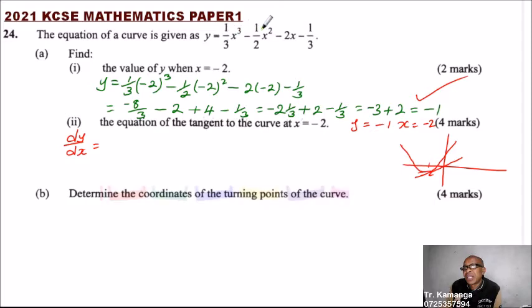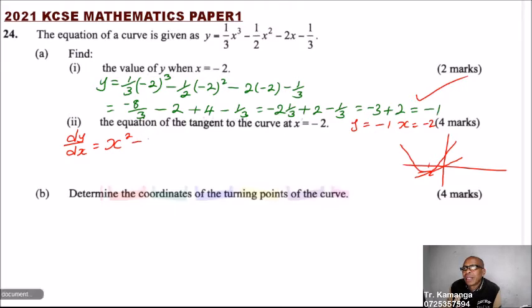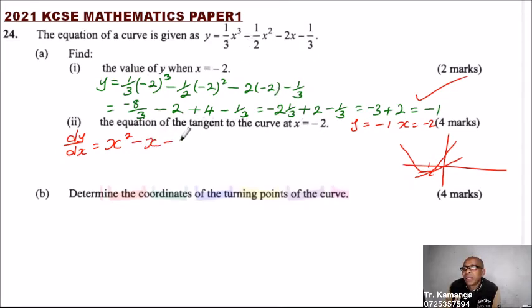We differentiate it. You multiply 3 times one-third, that will give us x squared. Then you multiply 2 here, that will give us minus x. And here you get minus 2. So dy/dx equals x squared minus x minus 2. This is the gradient function.